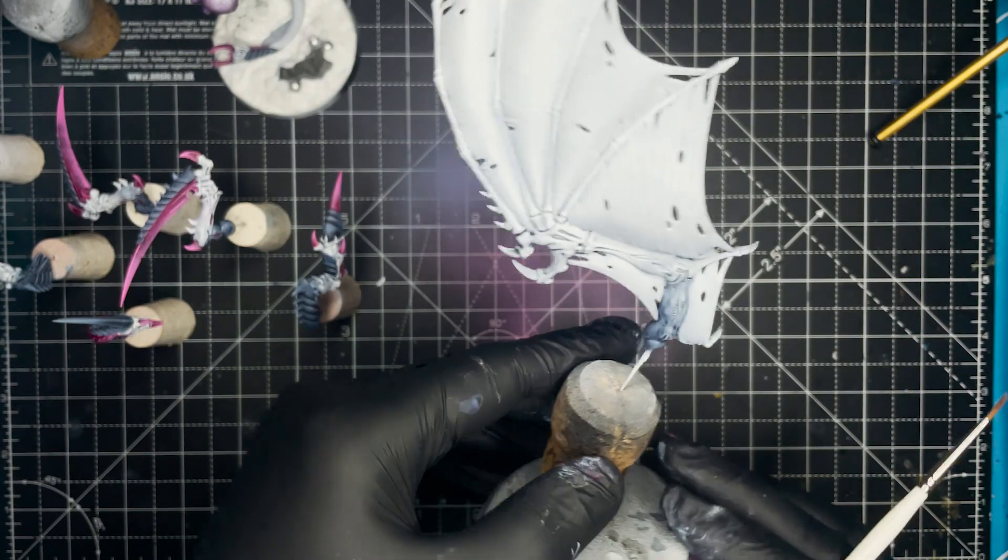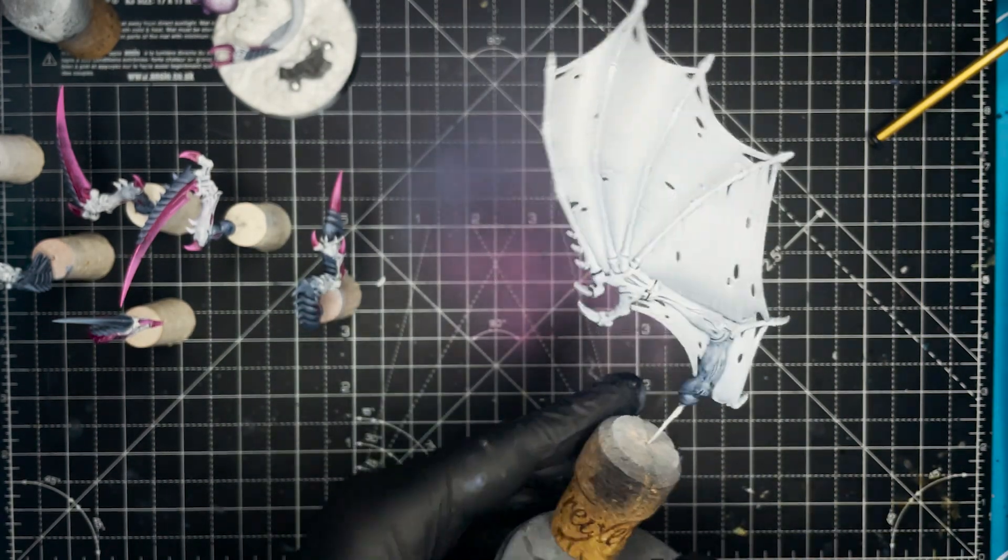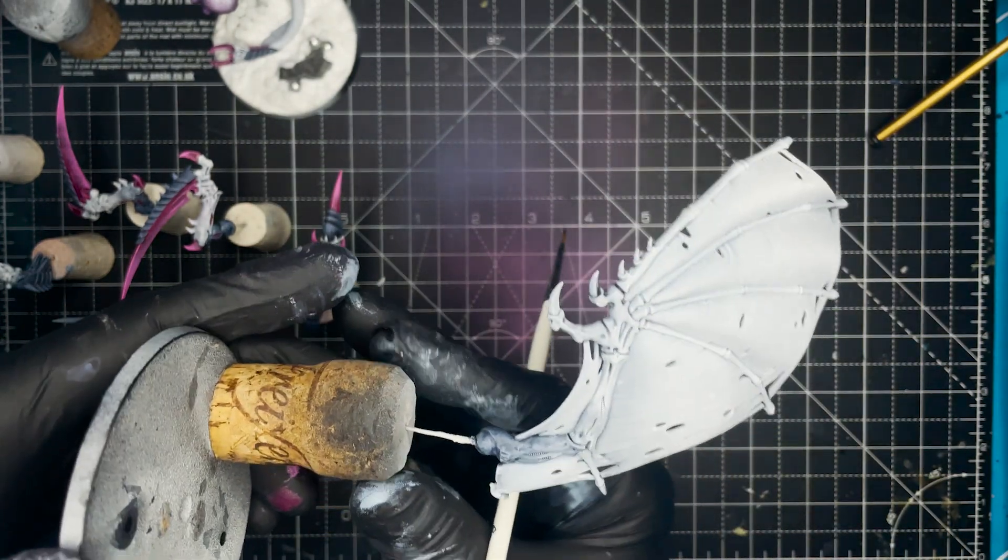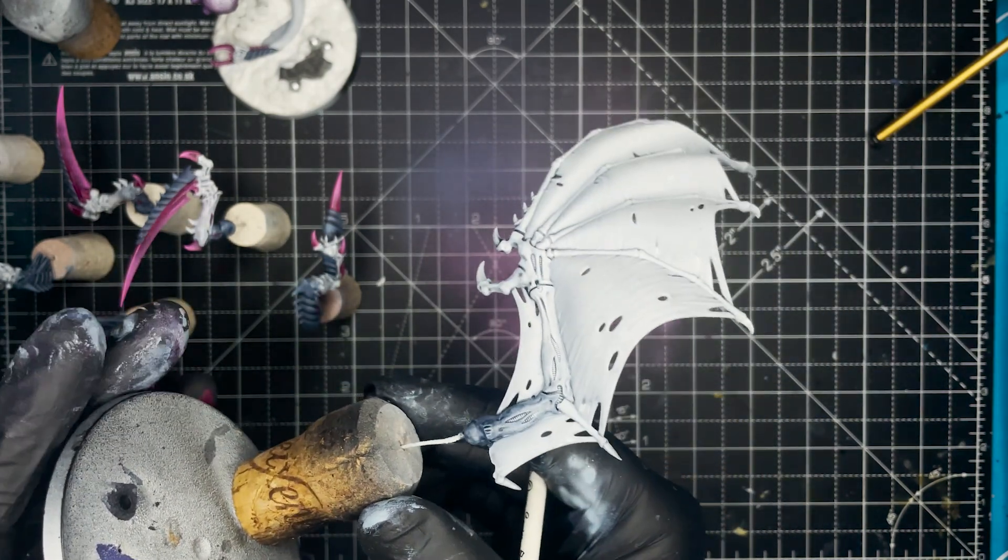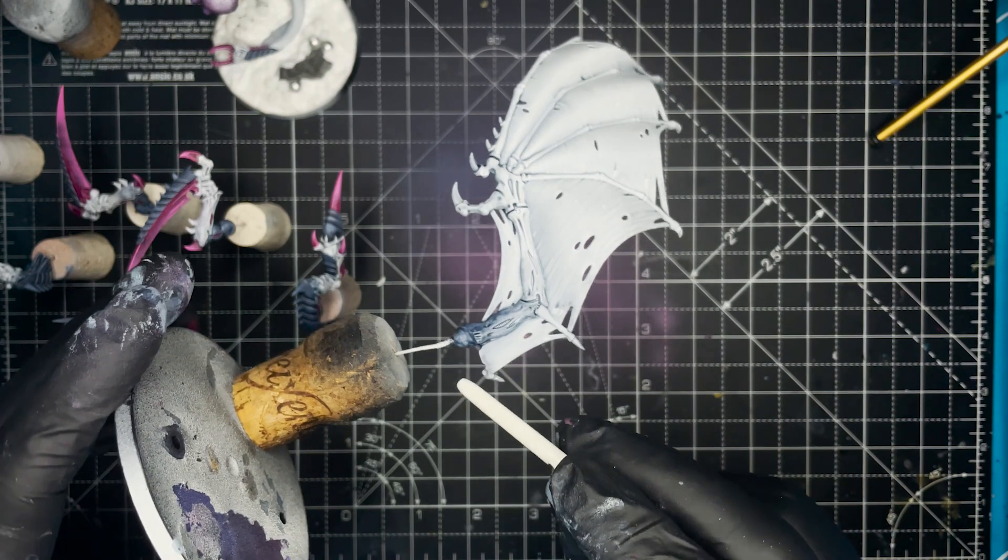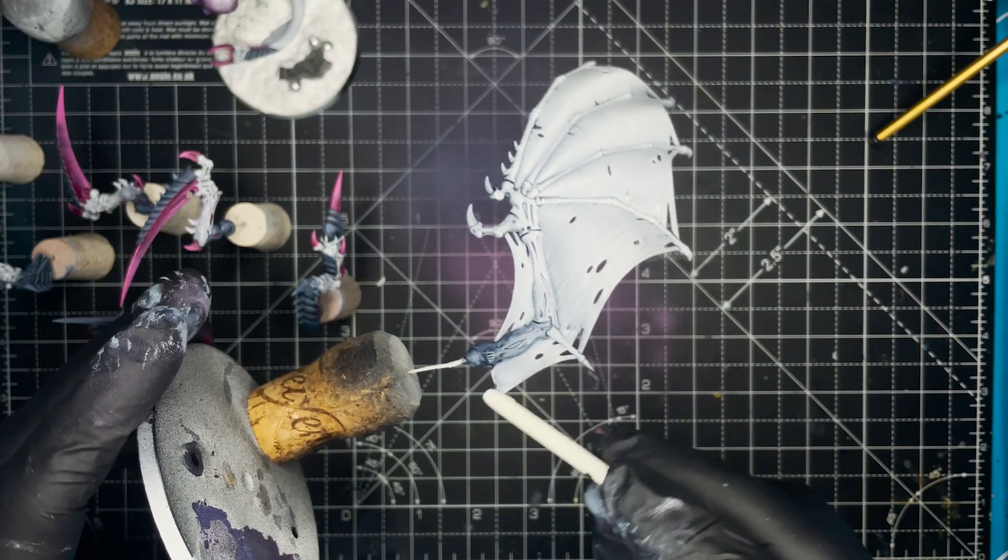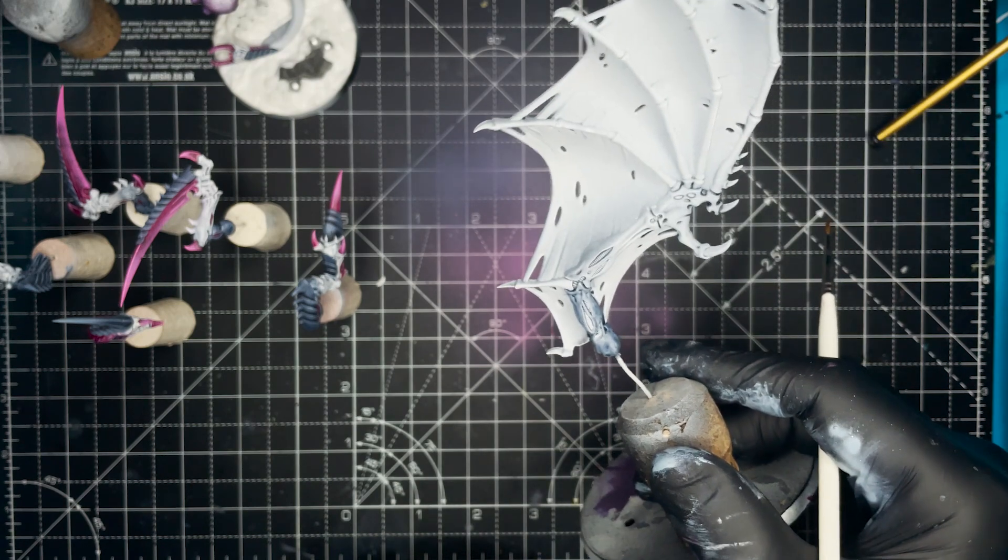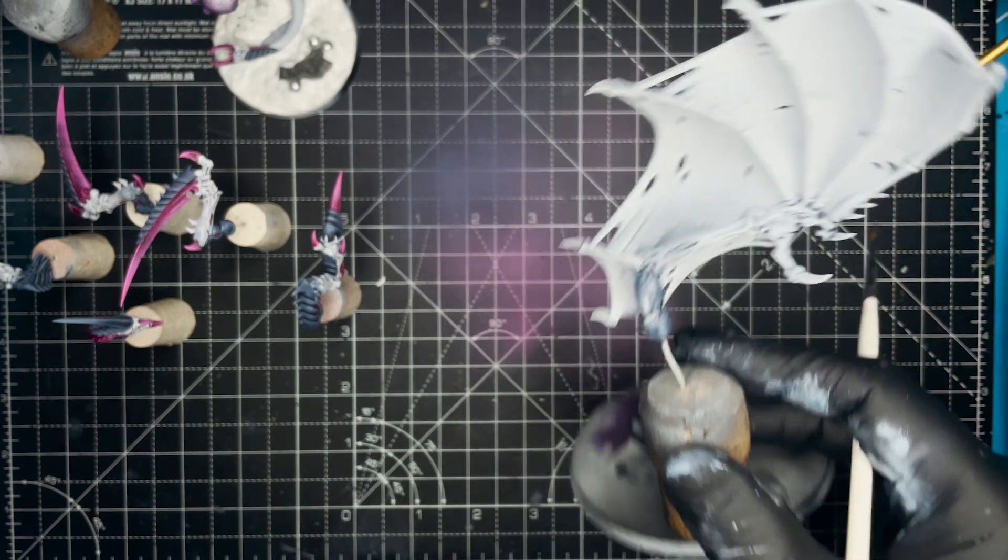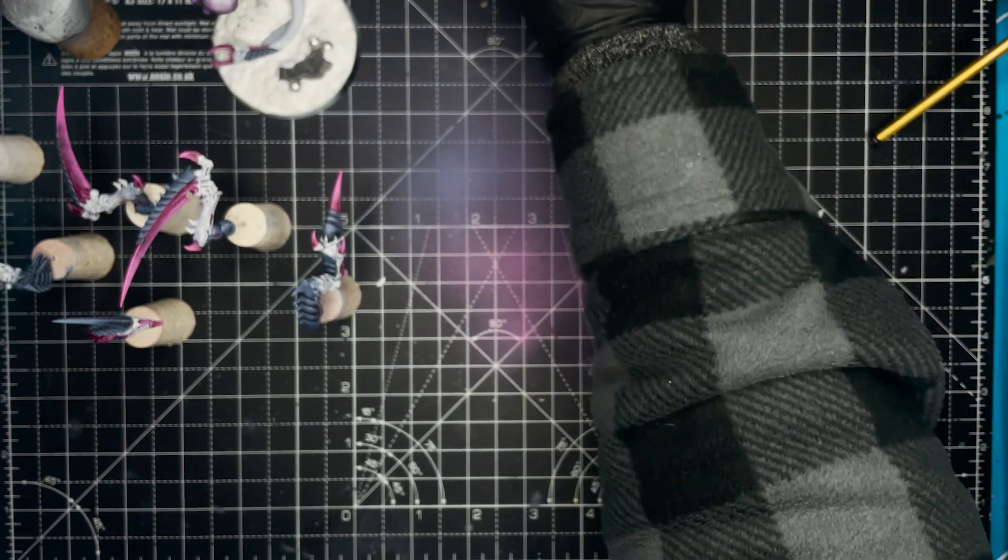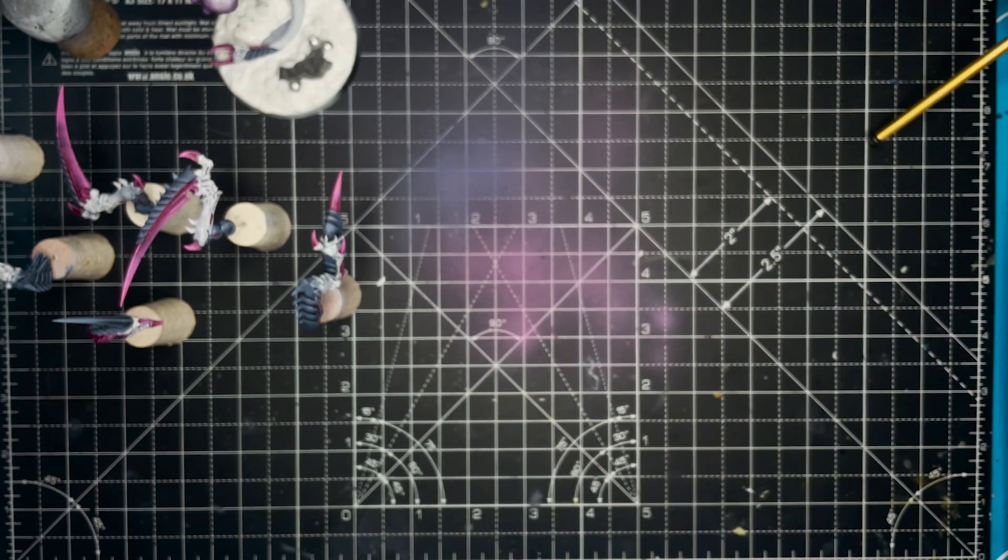So to start off with I primed the model in the same White Scar rattle can that I used for the rest of the model. And at this stage I did feather in the arms as well using the Space Wolves Grey. But to be honest I should have waited till after I'd painted the wings to do this. But in either case it's not a huge deal. As we can always go back in and touch up any mistakes that we do make.